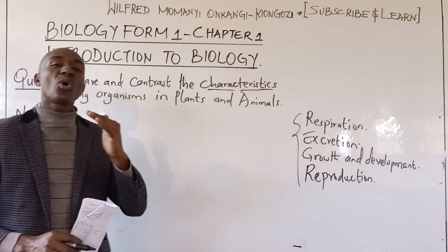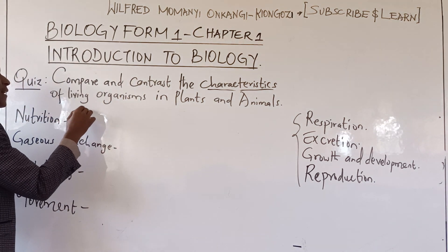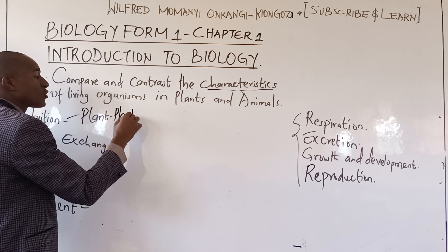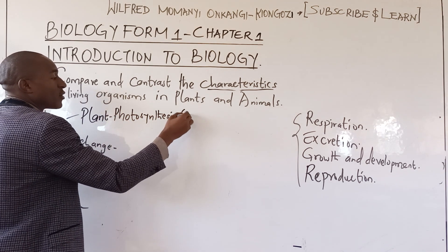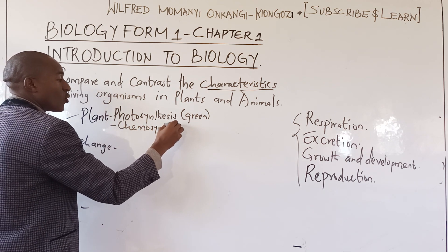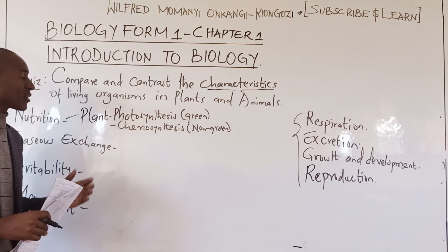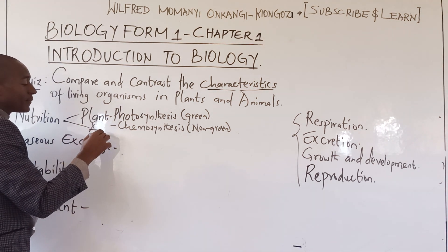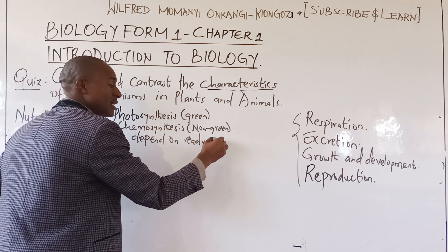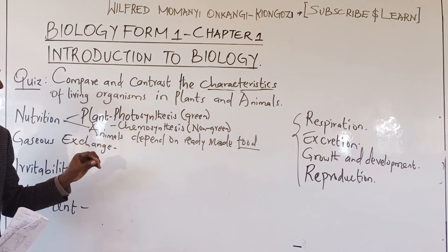All living organisms acquire and utilize nutrients. But plants manufacture their own food, whether by the process of photosynthesis — for green plants — or chemosynthesis, which is for non-green plants. Plants synthesize their own food. But animals depend on ready-made food; animals depend on plants or even other animals for food.